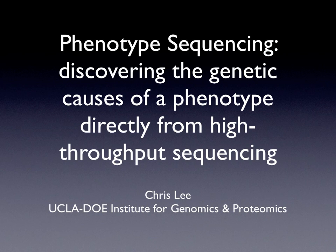My group works on computational analysis of experiment planning problems. I'd like to tell you today about some work that we've been doing on a very simple genomics problem of trying to use high-throughput sequencing to decipher the genetic causes of a phenotype — basically using the ability to generate independent mutant strains with a shared phenotype, using the statistics of independent selection events to rapidly pull the signal out from the noise.